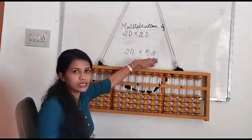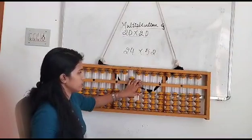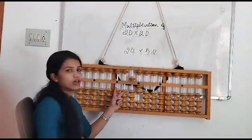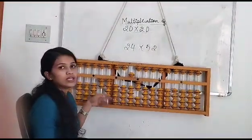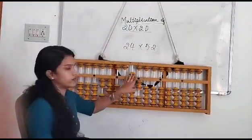First we will place 52, the multiplier, in the top case. Skip two rows and then place the multiplicand 24. I will place 20 and 4. Now this is 24 multiplied with 52.